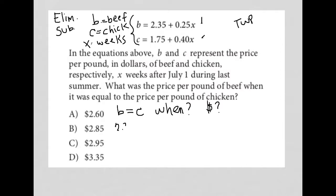I have 2.35 plus 0.25x equals 1.75 plus 0.40x.